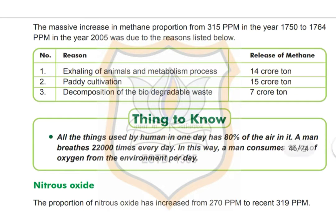This is due to the following main reasons — you can see one table given in your textbook. Exhaling of animals and the metabolism process release 14 crore tons of methane. Paddy cultivation releases 15 crore tons. Decomposition of biodegradable waste releases 7 crore tons. There is an urgent need to decrease the amount of methane released into the air.